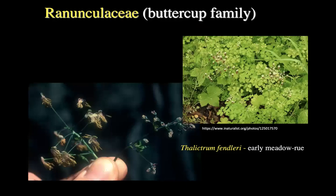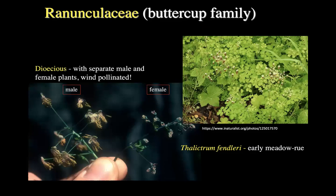This is Thalictrum fendleri, or one of many species of meadow rue — the one native to Colorado. These are understory herbs of the springtime, and unlike most other Ranunculaceae, they do not have showy petals because they have jettisoned animal pollination to be pollinated by the wind. This is a dioecious species with separate male and female plants, and you can tell when they're in flower which is which, and when they're in fruit — of course only the females will produce fruit. We'll look for that when we're out in the field.